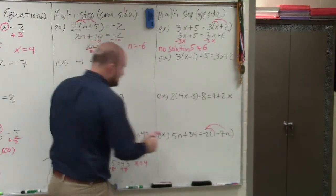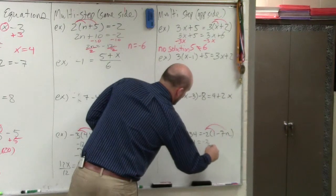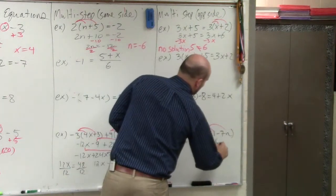So we apply the distributive property. And when doing that, I get 5n plus 34 equals negative 2 plus 14n.